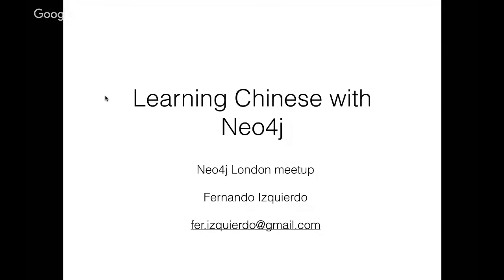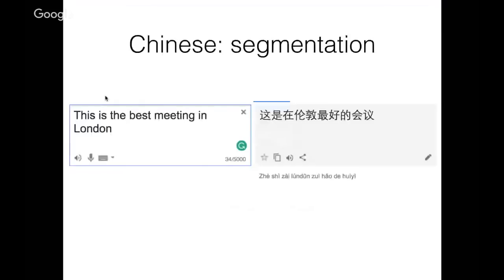Thanks for the introduction, Mark. I'm not really an expert in Neo4j, and I'm neither an expert with Chinese — so it's very amateurish. What I'm going to show today is this little side project where I'm using Neo4j to model learning Chinese vocabulary. I'll also show some screenshots on how I'm using this graph to build an application that helps me remember and follow recommendations for learning words. For those not familiar with Chinese, a good starting point is to look at the written language and the concept of segmentation.